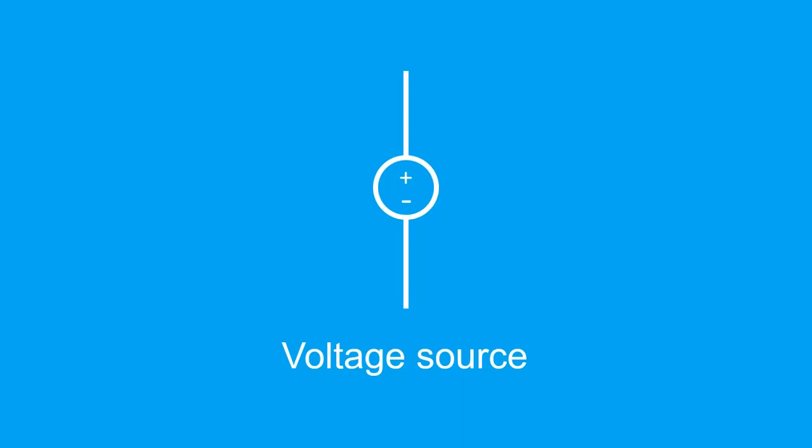Next, we have voltage sources. There are two types of voltage sources, namely DC voltage sources and AC voltage sources.